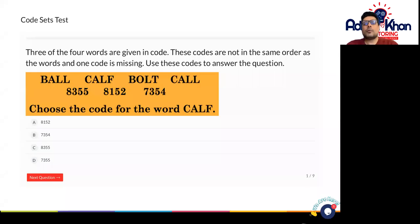Hello and welcome to code set questions. Let's show you how these are done. The question states first of all three of the four words are given below. These codes are not in the same order as the words and one of the codes is missing. Use these codes to answer the questions.